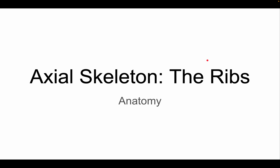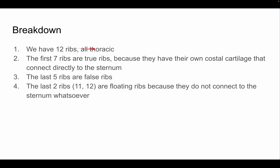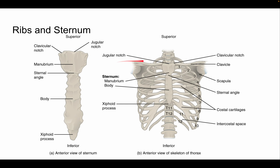Hello everyone, today we're going over the last part of the axial skeleton — the ribs. Here's a breakdown: we have 12 ribs, all thoracic in nature. They protect most of the thoracic viscera as well as some of the peritoneal ones. The first seven ribs are true ribs because they have their own costal cartilage that connects directly to the sternum. The last five are false ribs because they share a costal cartilage, and the last two — ribs 11 and 12 — are called floating ribs because they do not connect to the sternum whatsoever.